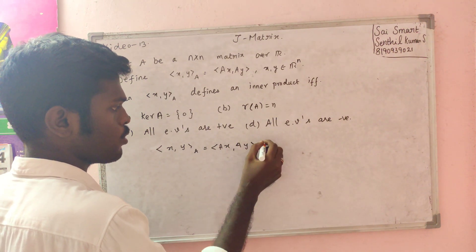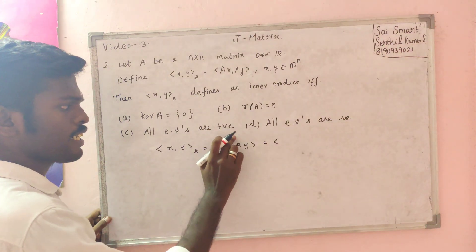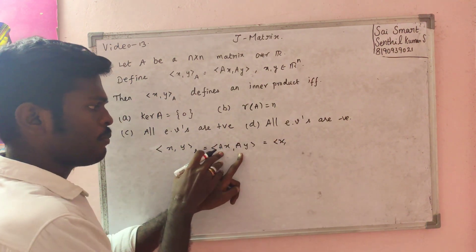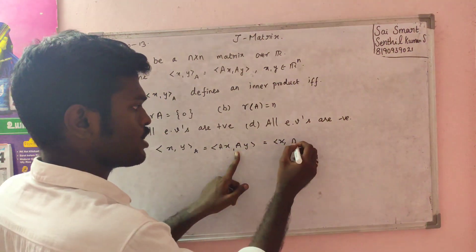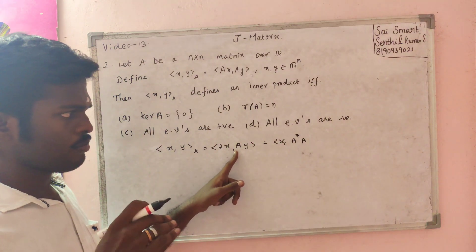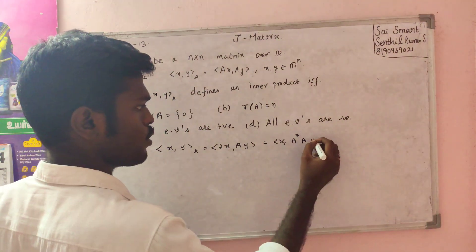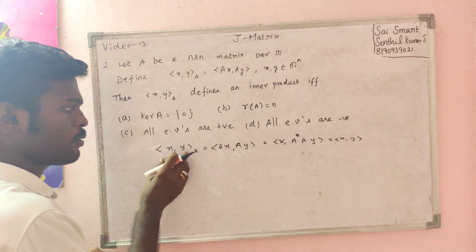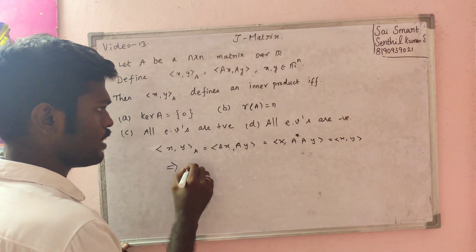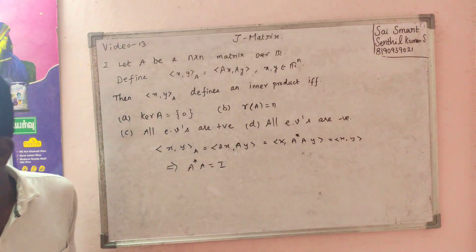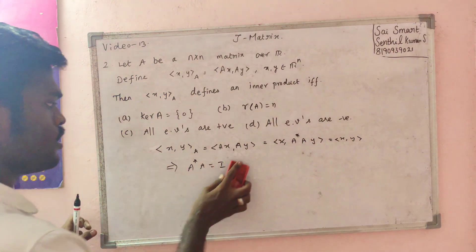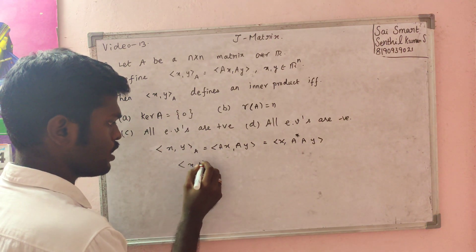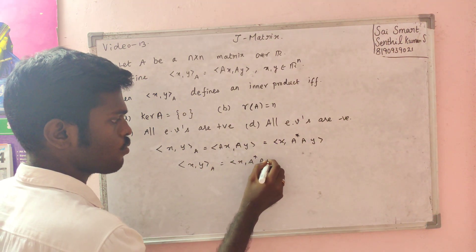Let's see this. When you shift the first element, you take the transpose. The transpose gives A-bar (conjugate transpose). So you can derive: A-star times A equals I, which gives you a new condition. We compare: ⟨x, y⟩_A = ⟨x, A-star A y⟩.